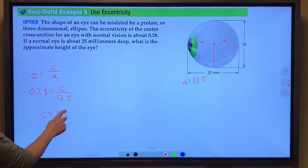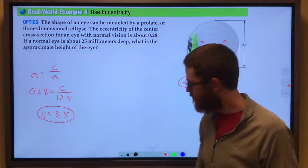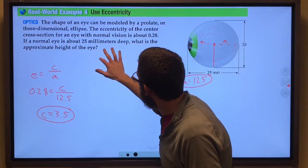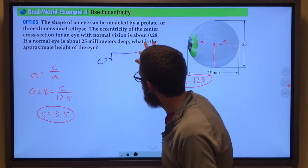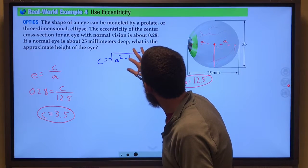Alright, so we have c, we have a, we can find b. We know that c is equal to the square root of a squared minus b squared.